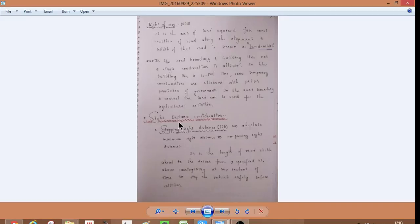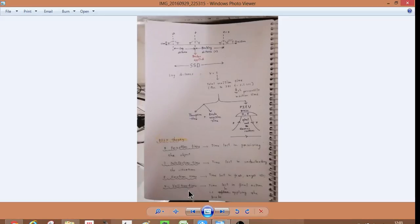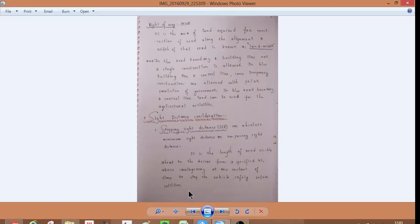Sight distance, stopping sight distance, SSD or absolute minimum sight distance. What is this? It is the length of the road ahead of the driver from its specified height above carriageway at any instant of the time to stop the vehicle safely before collision.